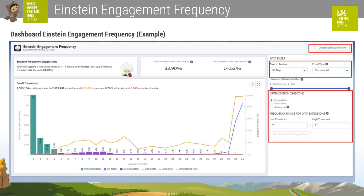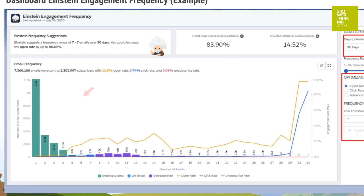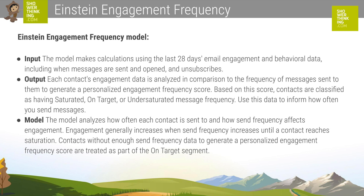This functionality identifies those subscribers who are already over-saturated and also the opposite case — the subscribers whom we are under-communicating with. The frequency split available in Journey Builder establishes different routes for customers according to four options: saturated, almost saturated, on target, or under-saturated. The model performs calculations using email engagement and behavior data from the last 28 days, including when messages are sent, opened, and unsubscribed. Contact engagement data is then analyzed against the frequency of messages sent to generate a personalized engagement frequency score.